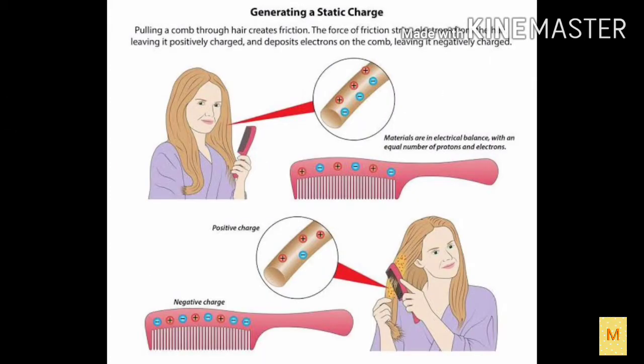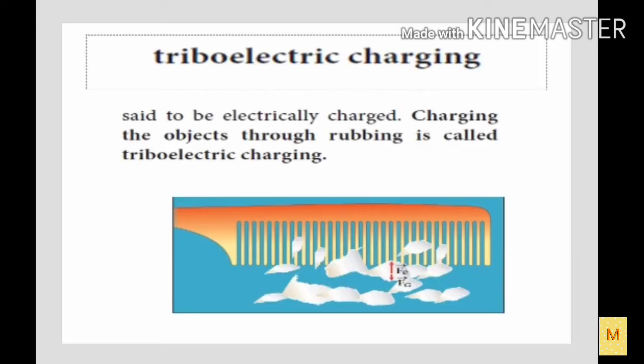Let us see one example. Look at the picture. From this picture, we can understand that the comb is said to be neutral in the beginning. When it is allowed to rub through the hair, then the hair will lose electrons and the hair will become positively charged. At the same time, the comb will become negatively charged because it accepts electrons from the hair. When this negatively charged comb is brought near to small pieces of paper, it will be able to attract the papers. This is because of triboelectric charging.